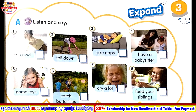Listen and say. Number one: crawl. Number two: fall down. Number three: take naps. Number four: have a babysitter. Number five: name toys. Number six: catch butterflies. Number seven: cry a lot. Number eight: feed your siblings.